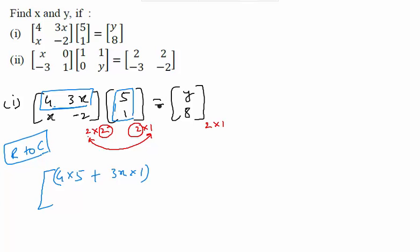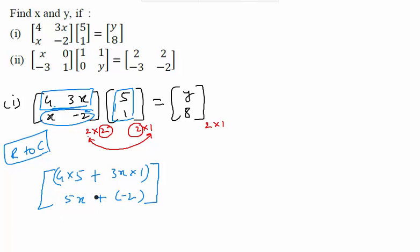There are no more columns in this case, so in our result we will not get any more columns. Moving to the second row — this row will also be multiplied with the column. Always think of flipping the row so that the first element is on top. The corresponding element of x is 5, and the corresponding element of minus 2 is 1. So after multiplication, it looks like 5x plus minus 2. That is the multiplication of the two matrices.